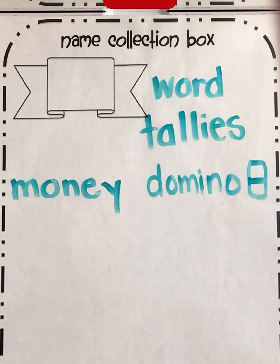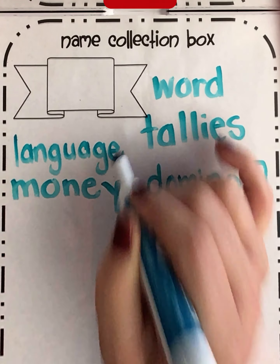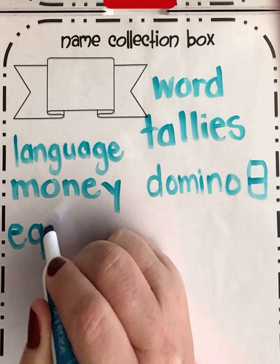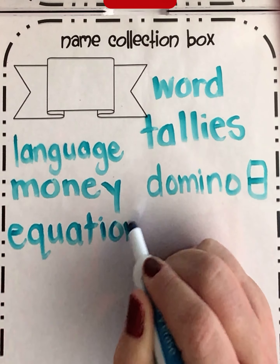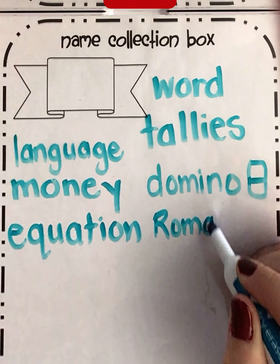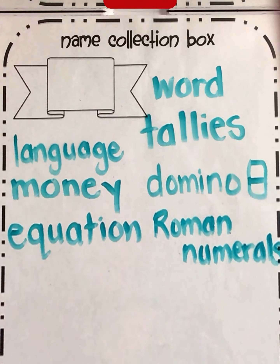Another way we can do it is if you know the word in another language. Maybe you know how to say that word in Spanish or maybe you know how to say the word in Mandarin. There are many different ways and languages that you can use. Another way that we can show a number is by using an addition or subtraction equation. Now the ancient Romans had their own system of showing numbers — something called Roman numerals.